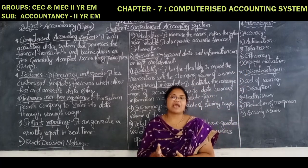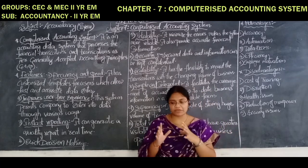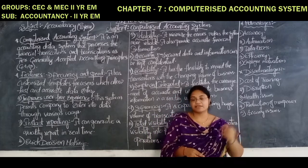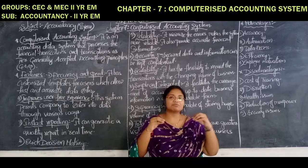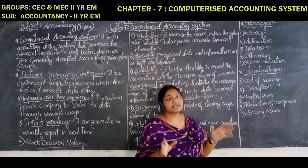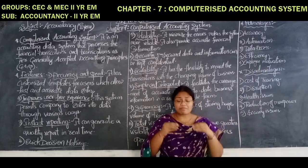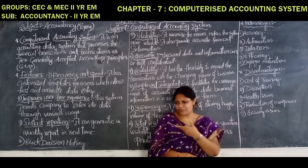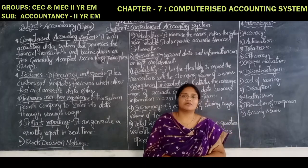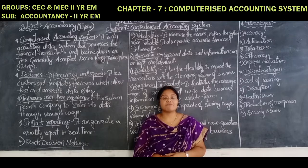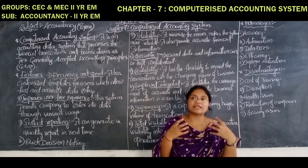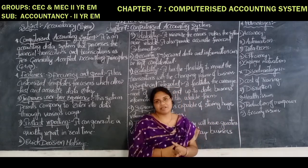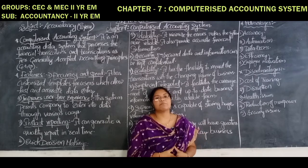Efficiency: whatever resources we have — whether human resources or financial resources — when we use them efficiently on time, it will give a good result. In the same way, with the help of this computerized accounting system, we have to use all the resources efficiently so that we can get a good result in time. Employee motivation: the employee should be motivated. When we send an employee to the training center — since all employees don't know what the computerized accounting system is — we will send those employees to training centers and skill development programs so that the employees get motivated, and when they come back to work they can do the work very efficiently and accurately without making any type of errors and omissions.